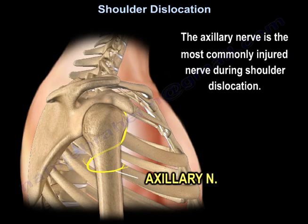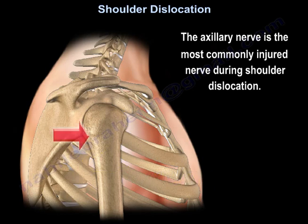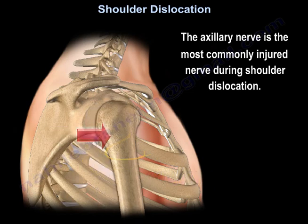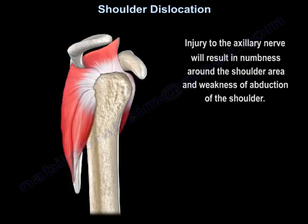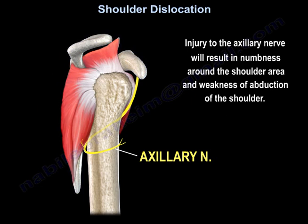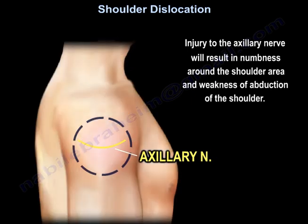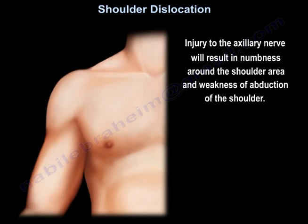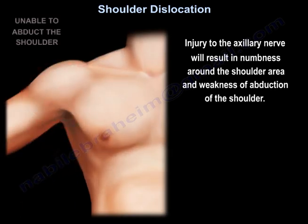The axillary nerve is the most commonly injured nerve during shoulder dislocation. Its injury will result in numbness around the shoulder area and weakness of abduction of the shoulder.